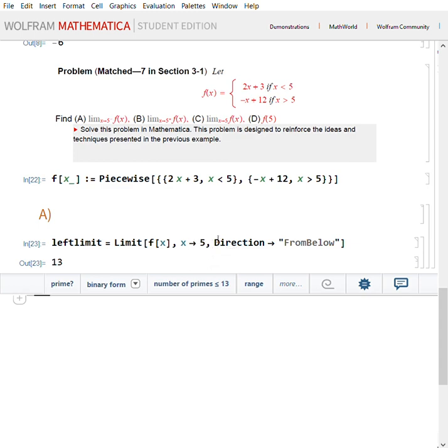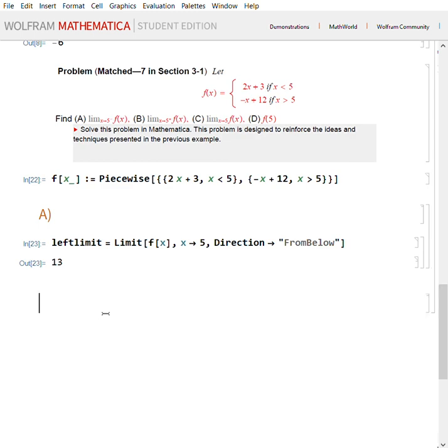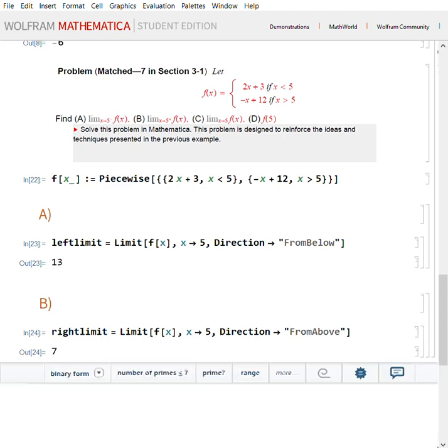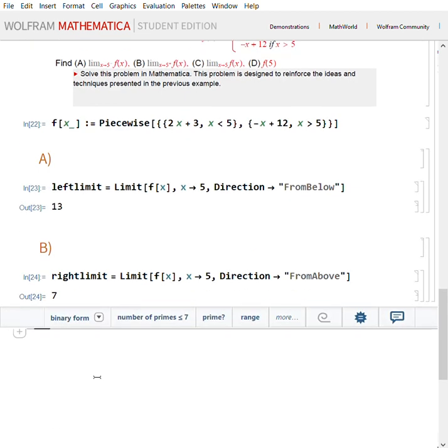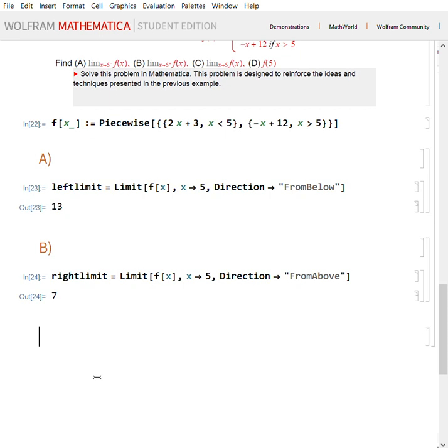Now let's go ahead and, if you would like, press alt 5, say B, and then arrow down. Now go ahead and define your second limit, which is right limit equals limit of f of x as x approaches dash shift period, gives you the arrow, 5. However, this time direction is from above, which gives you the right limit. Shift enter, and this is your right limit equals to 7. Now we go ahead and make this section, call it C, press arrow down.